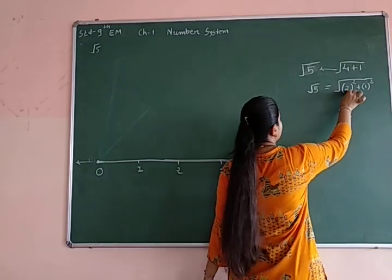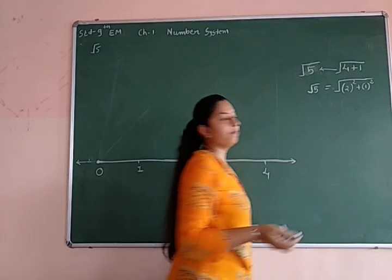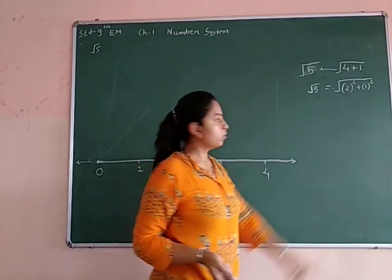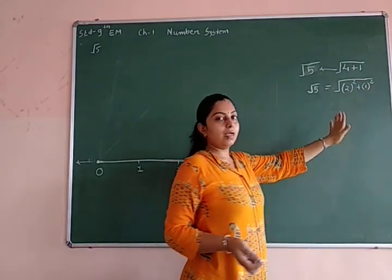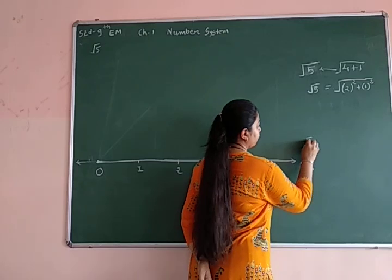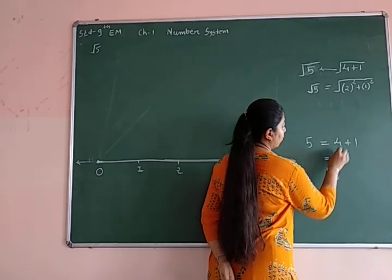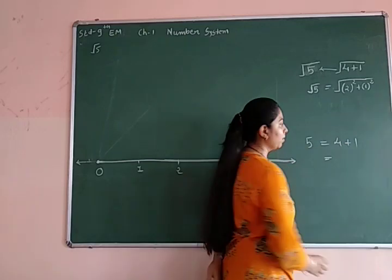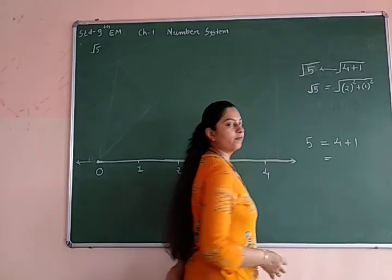So 2 square plus 1 square is equal to 5. Yes or no? 2 square is 4. And 1 square is 1. So 4 plus 1 is 5. Get it or not? I just reflect it again and repeat it and see. 5 is what? 5 is what? 4 plus 1. Now 4 is what? The perfect square number and 1 is what? The perfect square number. What is the square root of 4? 2.